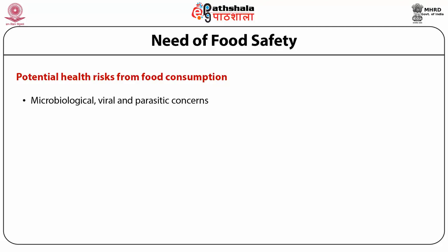Next is hormone residues. When we consume animal foods, some injections — for example, oxytocin — are given to cattle, and this comes into the milk or other animal food which we take directly, affecting our health. Next are animal drugs, including antibiotics, which also affect the human body.